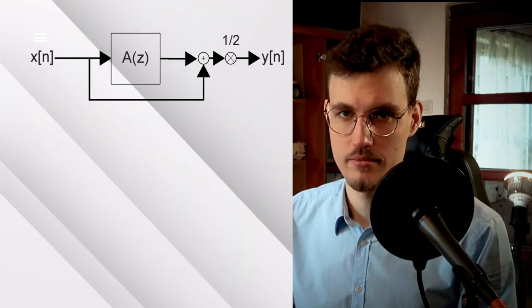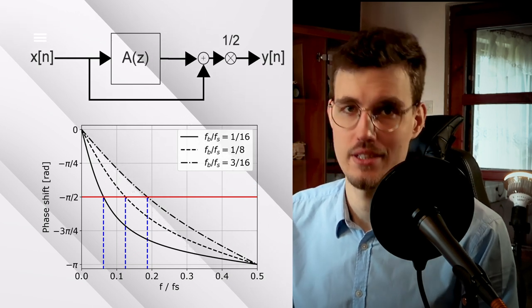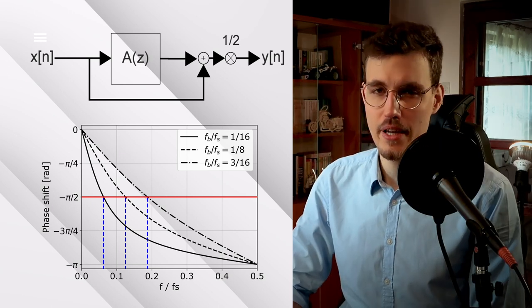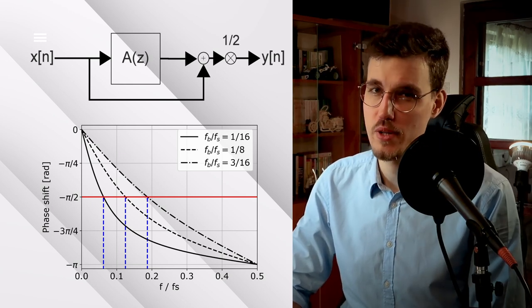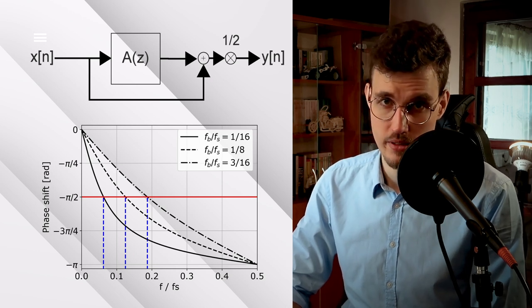What will happen if we add the output of the first-order all-pass filter to the original input signal, the so-called direct path? Since the phase shift at the Nyquist frequency is minus pi, we'll obtain a phase cancellation at this frequency.